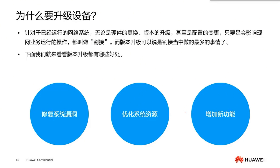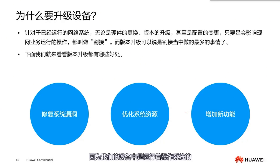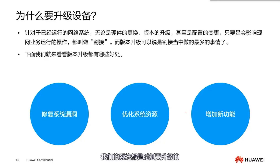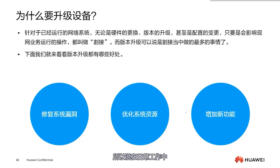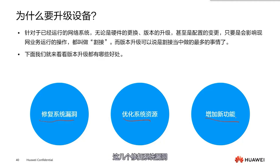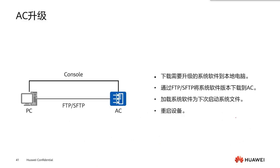This upgrade of VLAN devices includes the upgrade of ACs and also the upgrade of APs. Why do we need to upgrade devices? Because our devices operate on an operating system. Just like PCs with Windows or Apple's systems need constant upgrades, the same applies to Huawei's network devices. Both hardware and software may require upgrades, so in daily work we must know how to perform them. The benefits include fixing system vulnerabilities, optimizing system resources, and adding new features.